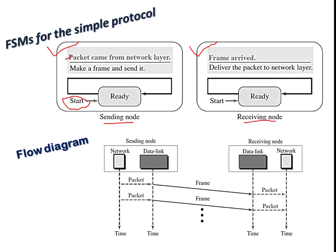Both sender and receiver are in the ready state, meaning as soon as an event occurs there is an action and a state transition. The event is the collected data from the network layer. As soon as this event occurs, the action is to make a frame and send it to the receiver. The frame won't perform any action until it arrives. Once it arrives, the data link layer at the receiver delivers the packet to the network layer.